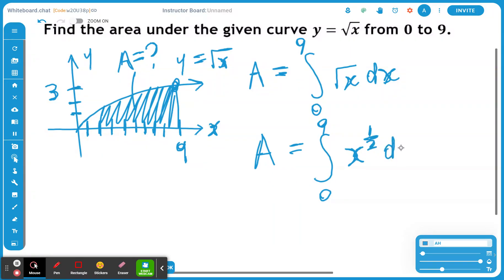Now, don't forget, when you find the antiderivative or the integration of x to the power of half, you have to add the exponent by 1. And half plus 1 is going to be 1 and a half, or 3 over 2. And you're dividing it by the new exponent. So you're dividing it by 3 over 2. And you have to evaluate this.